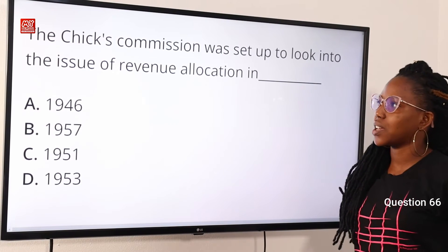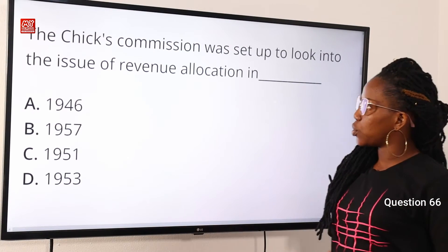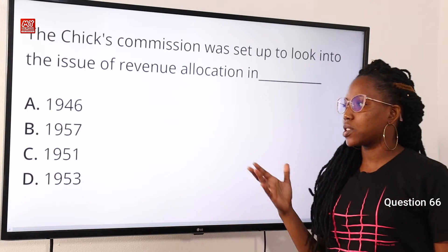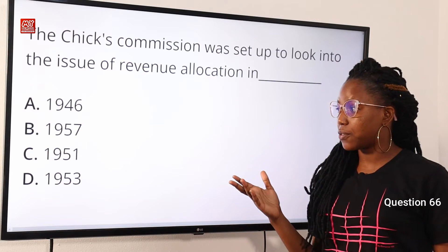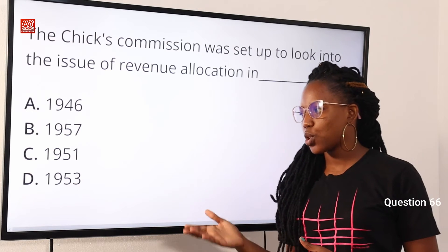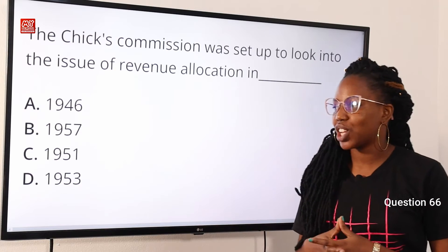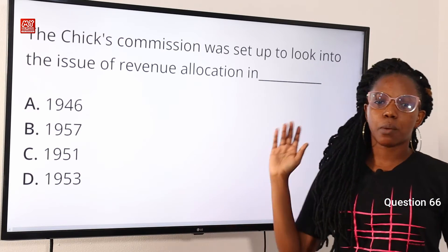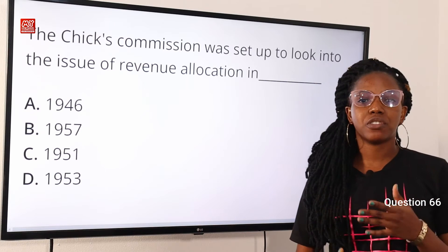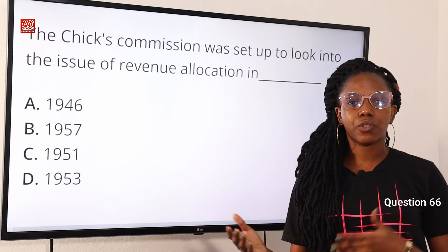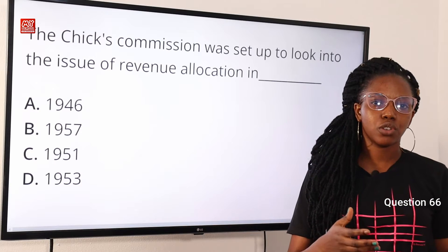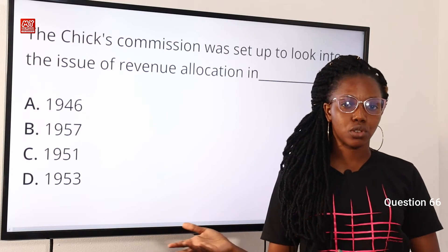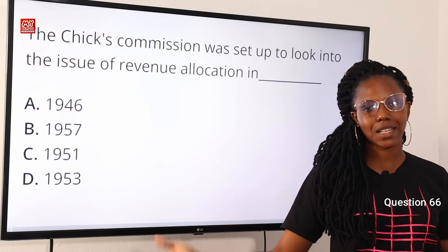Question 66: the CHICS Commission was set up to look into the issue of revenue allocation in — option A, 1946; option B, 1957; option C, 1951; option D, 1953. The answer is option D, 1953. The CHICS Commission applied the principle of derivation, recommending 50% of the revenue allocation to the federal government and the remaining 50% to other regions. Option D is the correct answer.